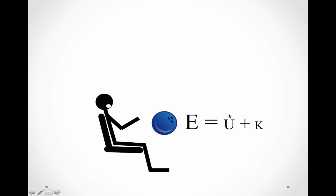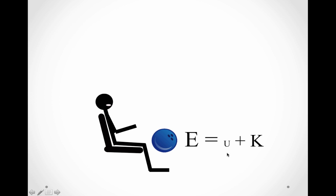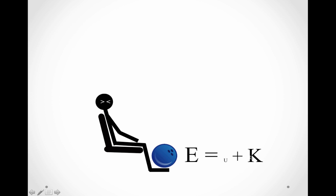As it falls further, there's less potential but more kinetic. The kinetic is actually becoming more than the potential. More kinetic, less potential — more kinetic, barely any potential left. Look at that: hardly any potential left, almost all kinetic. The kinetic is almost equal to the total energy.